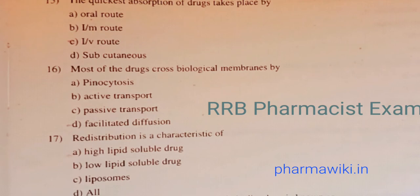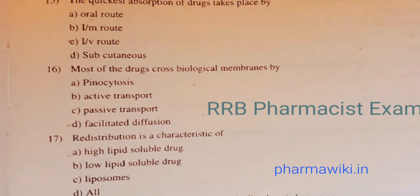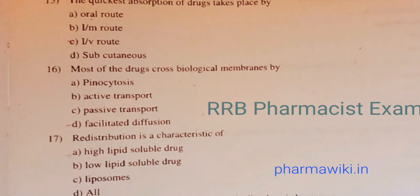Question 15: The quickest absorption of drugs takes place by — oral route, intramuscular route, intravenous route, or subcutaneous route. The quickest route is the intravenous route, so C is the answer.